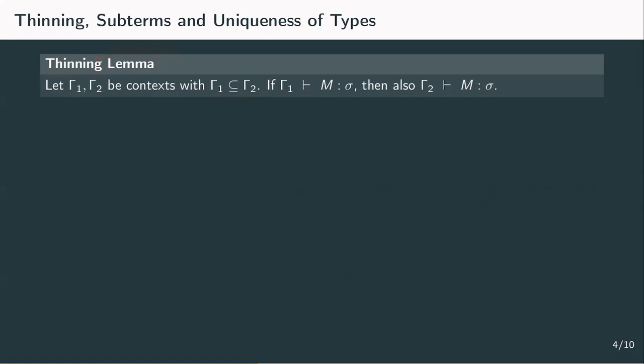By making the context bigger, we assume some declarations that obviously were not needed to yield m of a type sigma. So, the statement gamma 2 yields m of type sigma is weaker than gamma 1 yields m of type sigma.